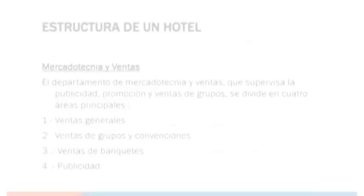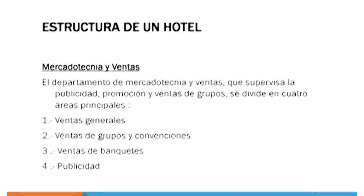El departamento de marketing y ventas está encargado de vender el hotel, sus habitaciones y los eventos. Los dos productos principales de venta de un hotel son las habitaciones y los eventos. El departamento se divide en cuatro partes: ventas generales, ventas de grupos y convenciones, ventas de banquetes y publicidad. En ventas generales, los ejecutivos de ventas salen a buscar clientes en la calle, visitando empresas corporativas y turísticas para traer clientes al hotel.